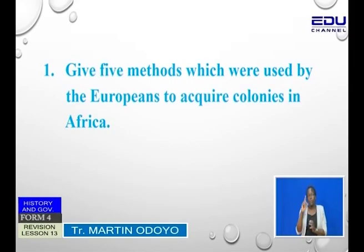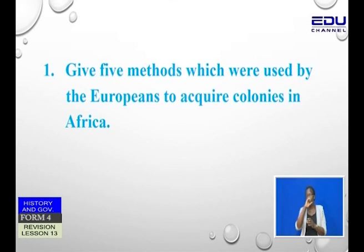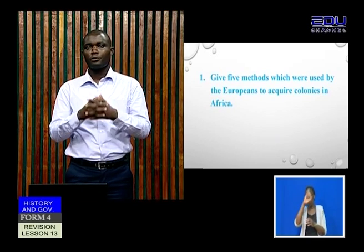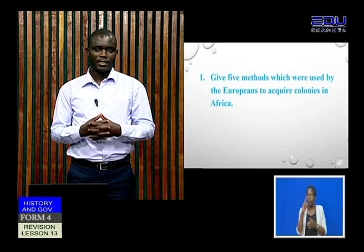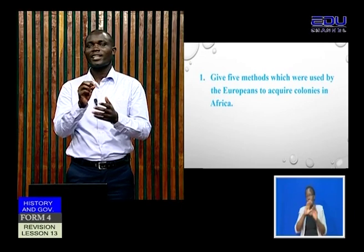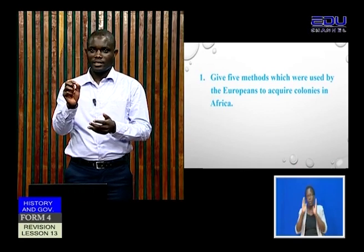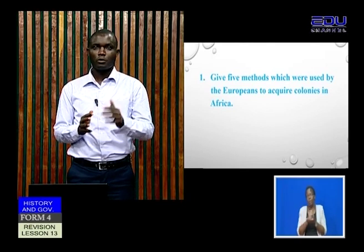The first question is: Give 5 methods which were used by the Europeans to acquire colonies in Africa. As we agreed earlier, as historians, for you to fully provide the correct responses required in this question, you must fully understand it. And by doing so, you should understand the key words. So as historians, we need to underline the key words or the key terms, because they will easily help you to understand the question better.